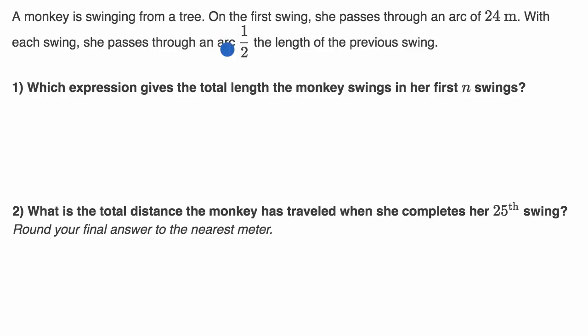So what's going on here? Let's say this is the top of the rope or the vine that the monkey is swinging from. And so on that first swing, I could draw a little monkey here. So this is my little monkey. So on that first swing, the monkey will go 24 meters. Then that arc is 24 meters.